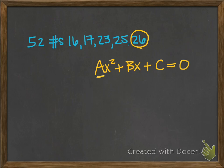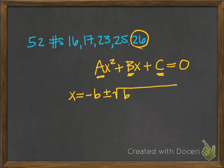Capital A, capital B, and capital C represent the coefficients of those terms. You're going to try to factor it, and it's not going to factor. So in that case, you've got to use the quadratic formula: x equals negative B plus or minus the square root of B squared minus 4AC, all divided by 2A.